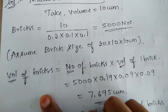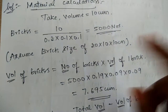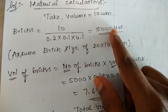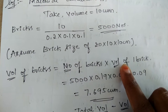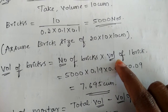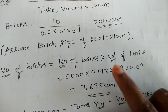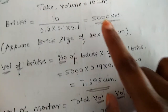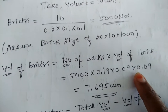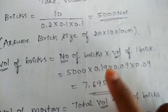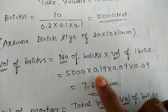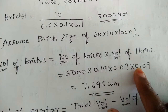Now let us find the volume of bricks. The volume of bricks will be found out by multiplying the number of bricks with the volume of one brick. Here, while considering the volume, we have to take the nominal size of the brick. The nominal size of the brick is 19 by 9 by 9 centimeter. This standard size includes the mortar thickness, but the nominal size does not include the mortar. On converting to meters, the size of the brick is 0.19 by 0.09 by 0.09.